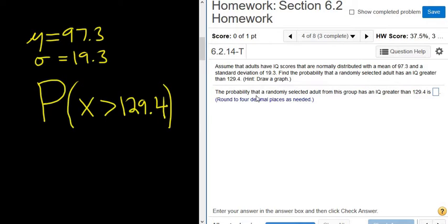All right, and then it says the probability that a randomly selected adult from this group has an IQ greater than 129.4. It says hint, draw a graph. Well, I don't think we need to do that.